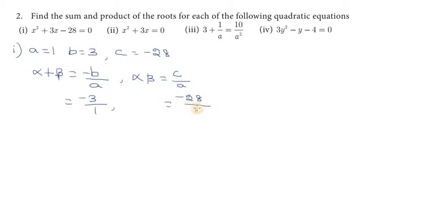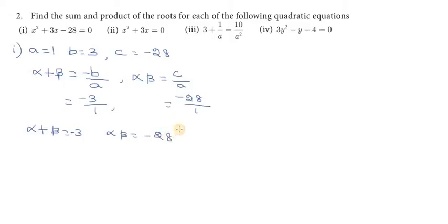So, alpha plus beta value is minus 3. Okay, minus 3. And then alpha into beta value is minus 28. So, sum will be minus 3 and product will be minus 28. So that will be the answer.